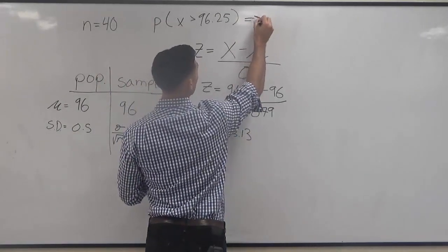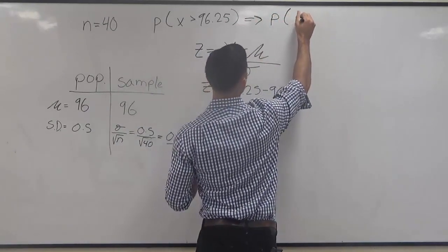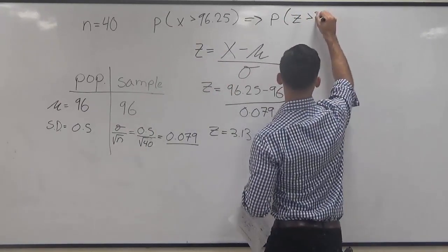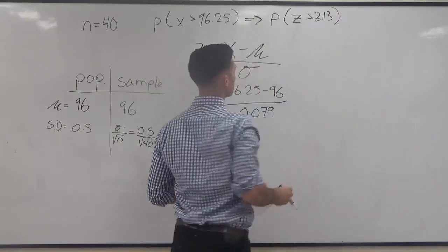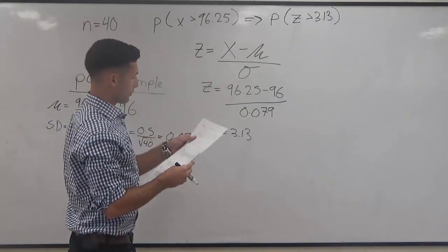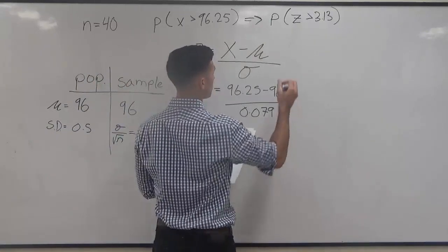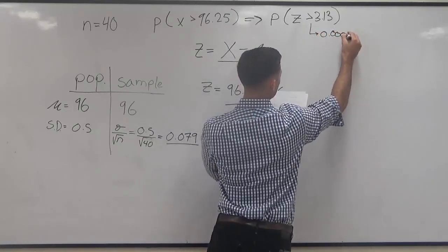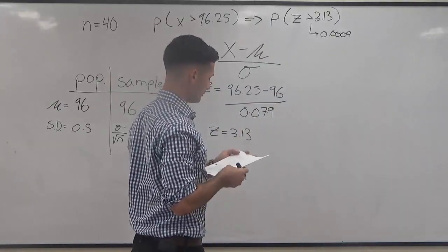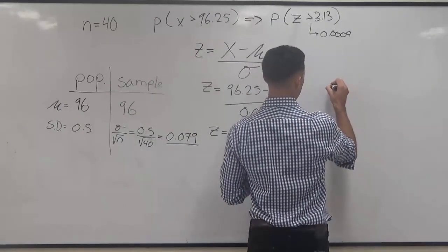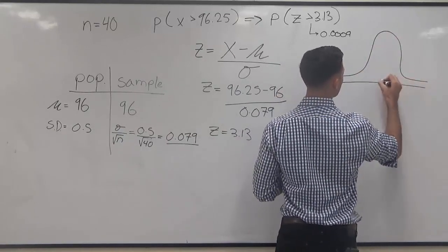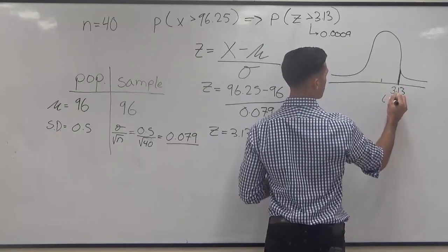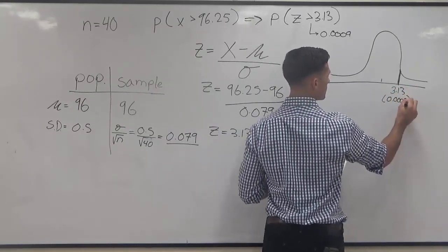So now we're looking for probability that Z is greater than this score, 3.13. Based off of our Z score table, 3.13 is going to correspond to 0.0009. So we want to draw this out. Our Z is 3.13, that's positive.